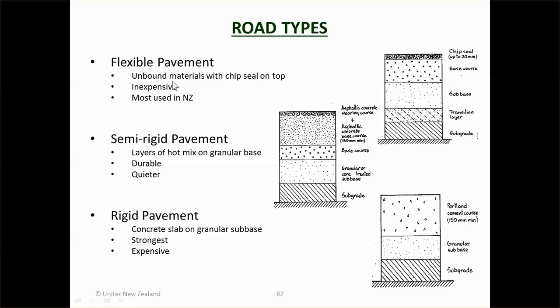The road types: flexible pavement is a subgrade with a subbase, base course, and a chip seal on top. It's called flexible because if the subgrade settles, the top will settle too — you'll get potholing. It's an inexpensive approach, using unbound materials, and is most commonly used in New Zealand because it's the lowest cost. You can also have a thin layer of asphalt concrete — hot mix — instead of or on top of the chip seal.